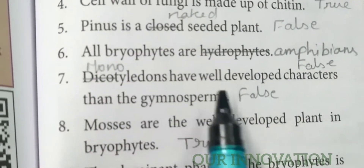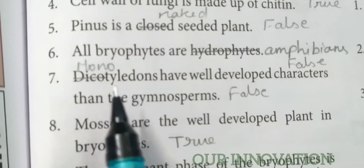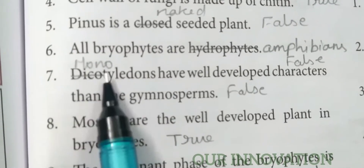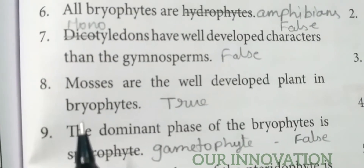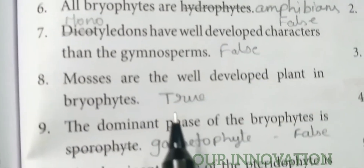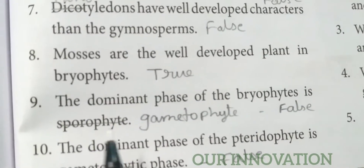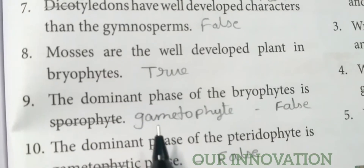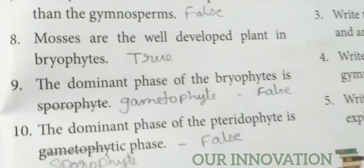Dicotyledons have well-developed characters than Gymnosperms — correct to Monocotyledons — False. Mosses are the well-developed plants in Bryophytes — True. Dominant phase of Bryophytes is sporophyte — it is gametophyte, not sporophyte — False.